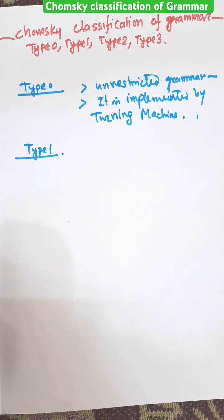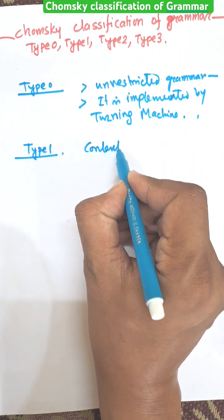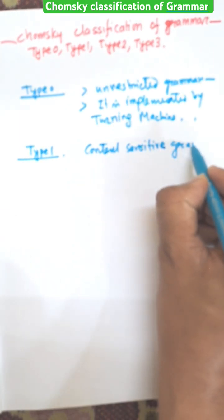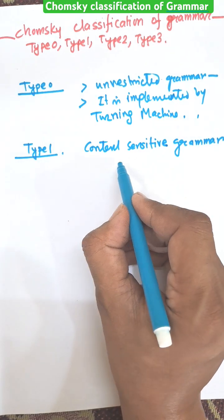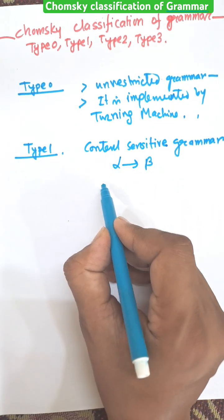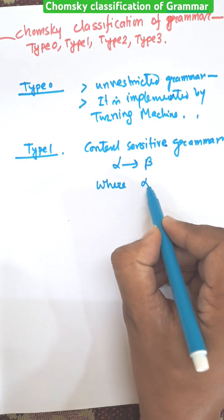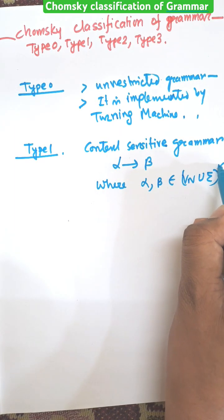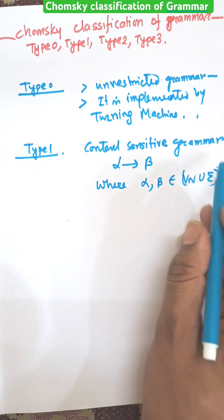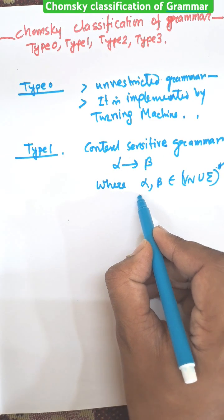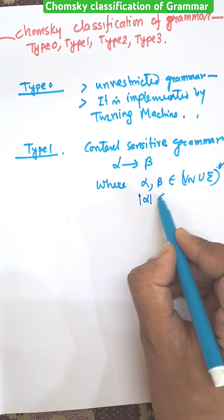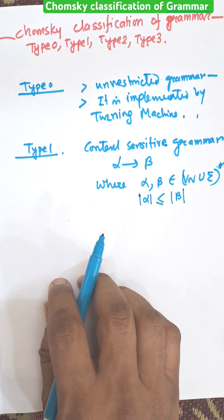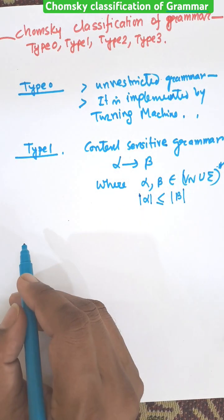Type 1 grammar is known as context-sensitive grammar. The production rule is always alpha → beta, where alpha is the left-hand side and beta is the right-hand side of the production. Both belong to (Vn ∪ Σ)*, where Vn is the variable and Σ is the input alphabet, and * means closure. The constraint is that the length of alpha must be less than or equal to the length of beta.